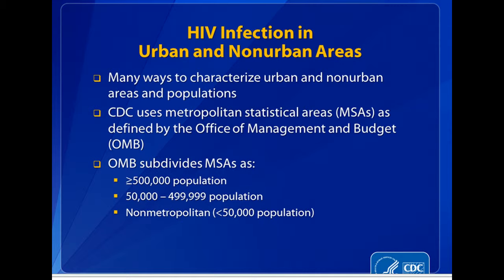Let's look at some data on HIV statistics in urban and non-urban areas. Surprisingly, HIV and AIDS is really increasing in non-urban areas, as we'll see in the coming slides. Looking at the numbers, the larger areas are greater than 500,000 — those are your large cities — then medium-sized cities, which Rock Hill would fall into with a population of about 65,000, and then more rural areas throughout the county and state.